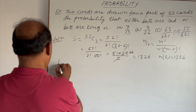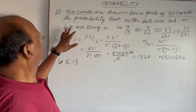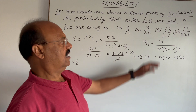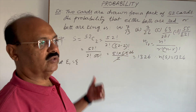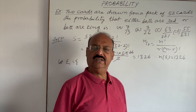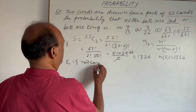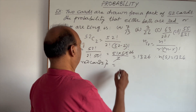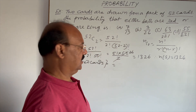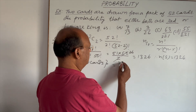Let E1 be the event when the drawn cards are red cards. We have to find the probability that the two cards are either both red or both king, so we take two events: Event E1 when cards are red, and Event E2 when cards are king. The total number of red cards is 26, and out of 26 we select 2, so n(E1) = 26C2.